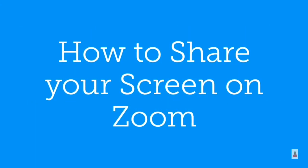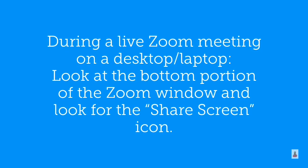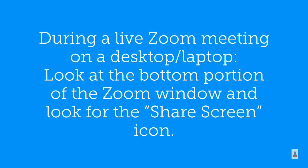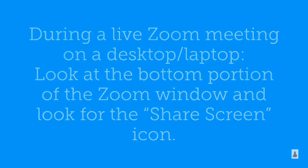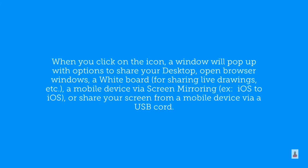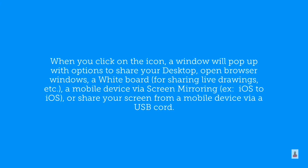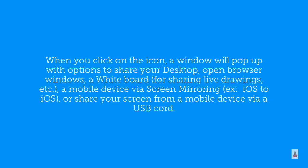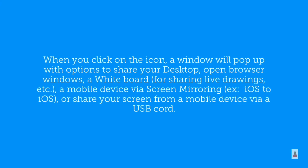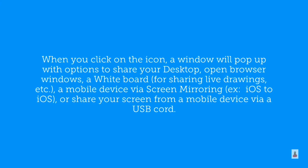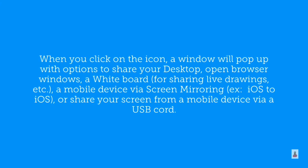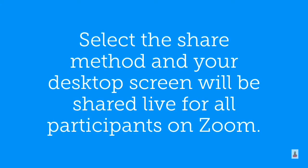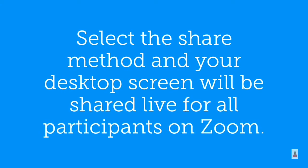How to share your screen on Zoom. During a live Zoom meeting on a desktop or laptop, look at the bottom portion of the Zoom window and find the share screen icon. When you click on it, a window will pop up with options to share your desktop, open browser windows, a whiteboard for sharing live drawings, a mobile device via screen mirroring such as iOS to iOS, or to share your screen from a mobile device via a USB cord. Select your share method and your desktop screen will be shared live for all participants.